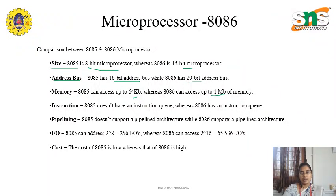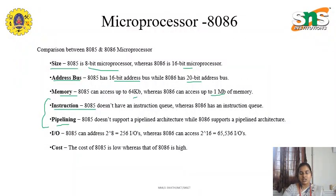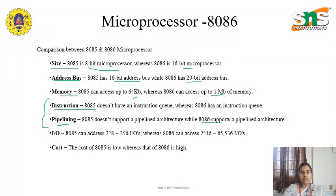Coming to instruction queue and pipelining, these are the major two features of 8086, whereas instruction queue is not supported in 8085 but it is supported in 8086. So there is a main feature of the 8086 microprocessor. Next coming to the pipelining technique, 8085 doesn't support a pipelining architecture, whereas 8086 supports a pipelining architecture. The instruction queue can store up to 6 bytes of instruction, and pipelining allows fetching the next instruction because the execution unit is not running.